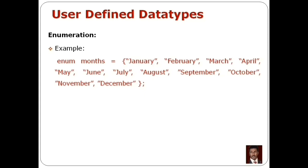Then we separate the next value — February, March, April, through December — each value enclosed in double quotes and separated from the others. Then we close the curly braces and add the semicolon. This is an enumerator type variable declaration.